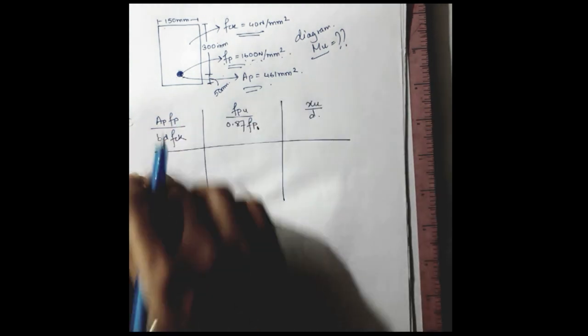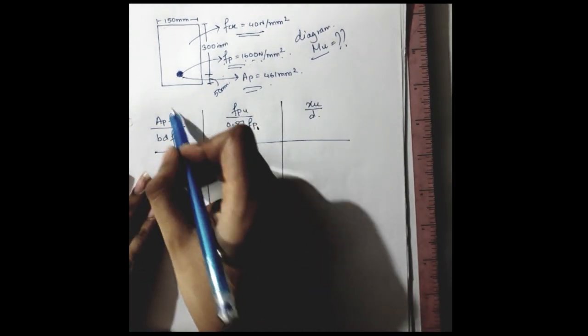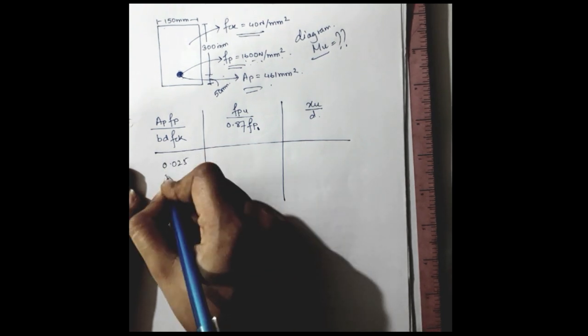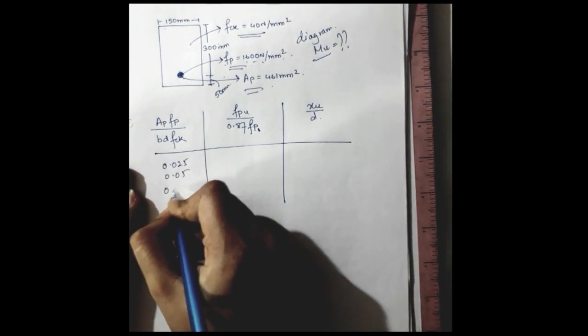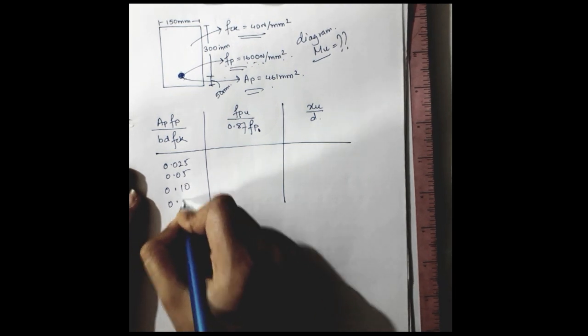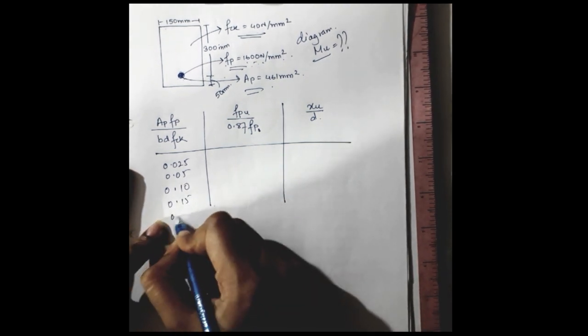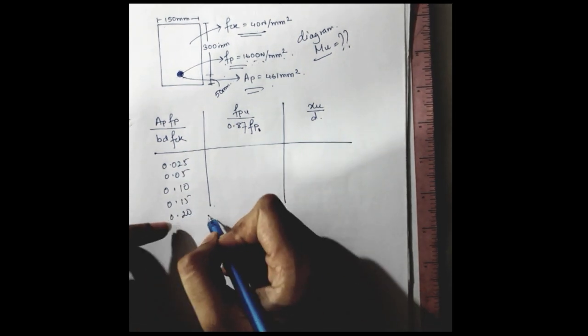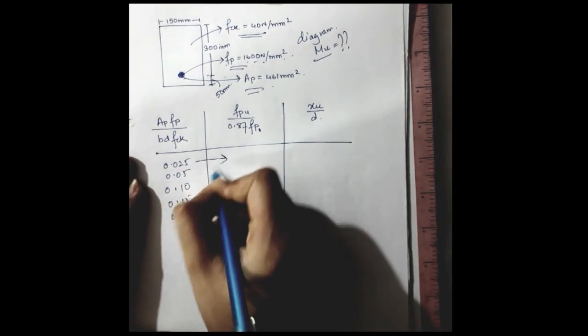In the code you will get to see this kind of arrangement is provided, where corresponding to these values, this is provided in this fashion where all the values have been provided with the interval of 0.05.